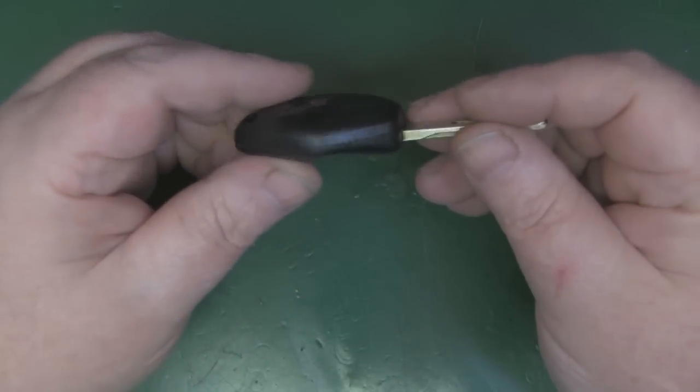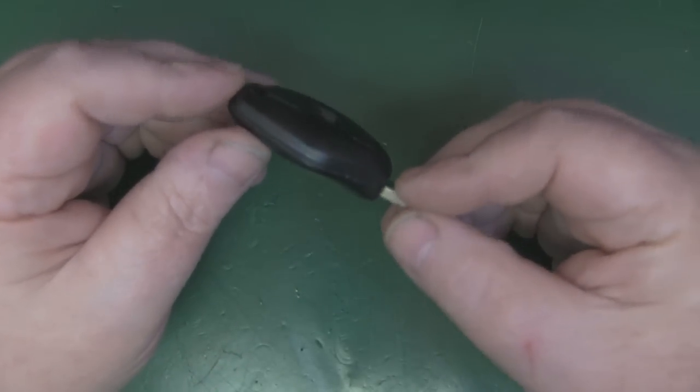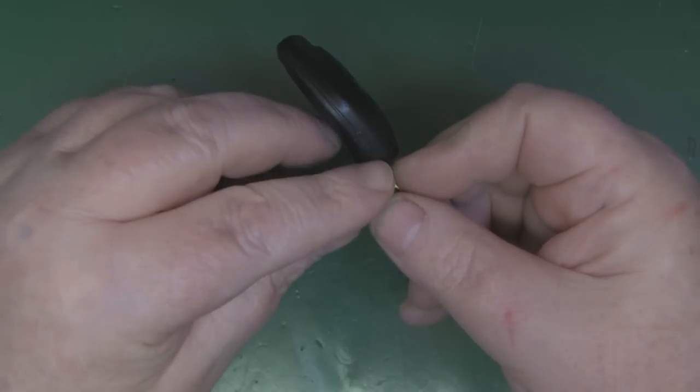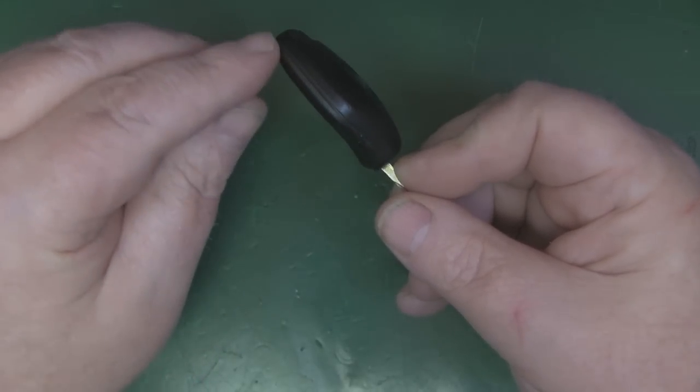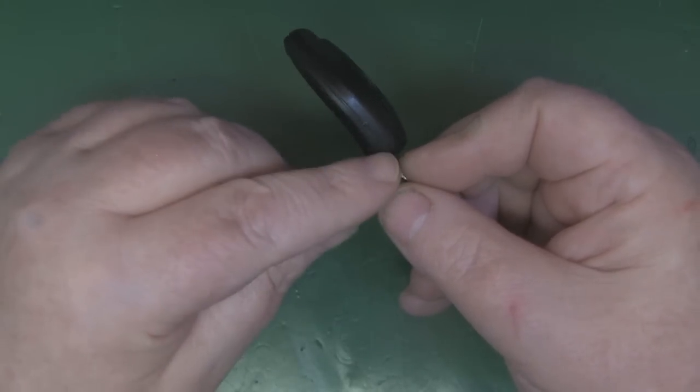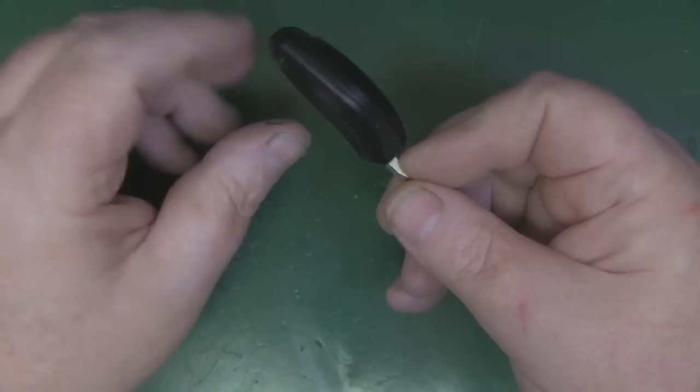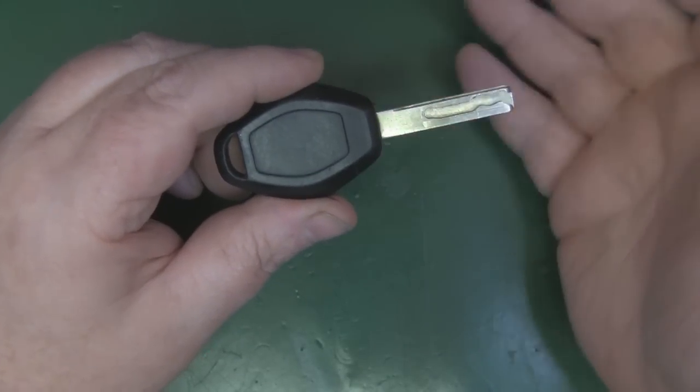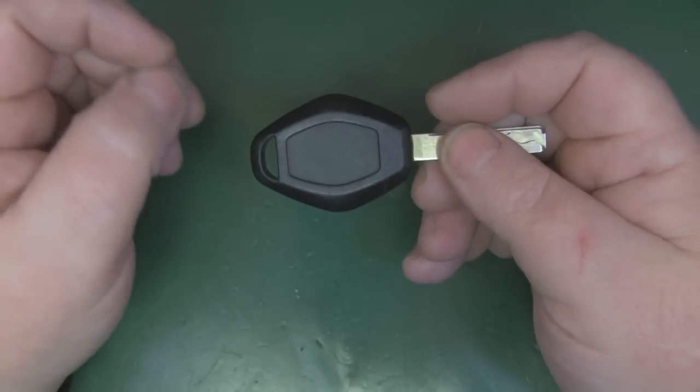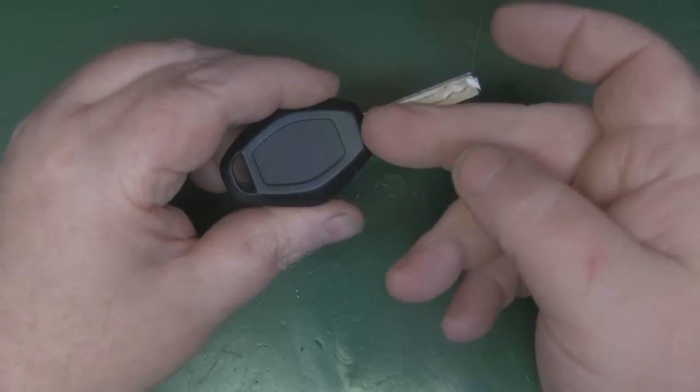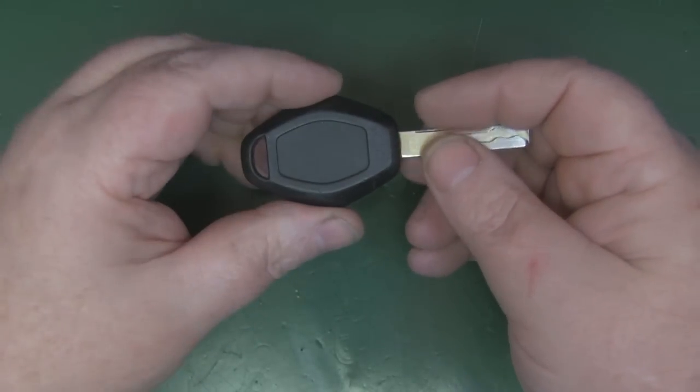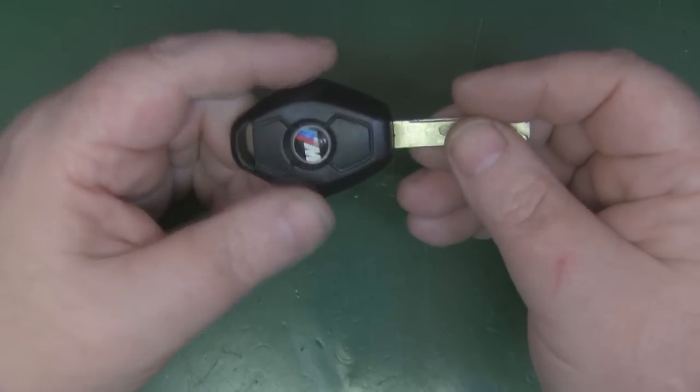The way BMW have constructed this key, it's impossible to get into without using some kind of force because it's plastic welded all down the side here. Other key fobs I've had, like Volkswagens, either click open with little tabs or have a little screw holding them in place.